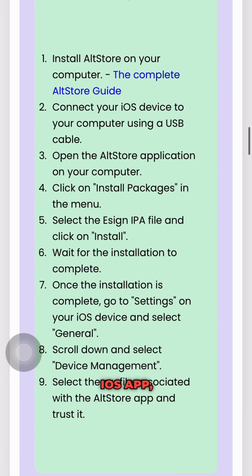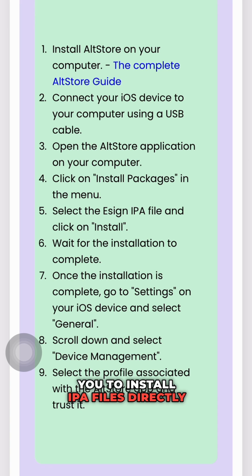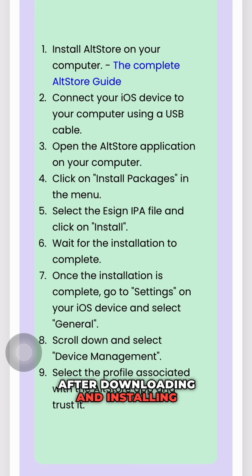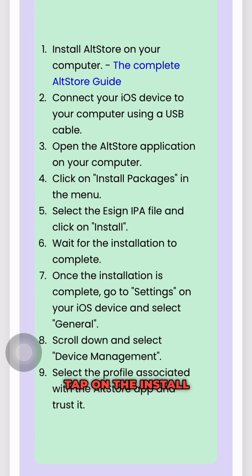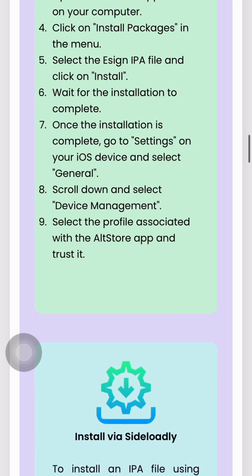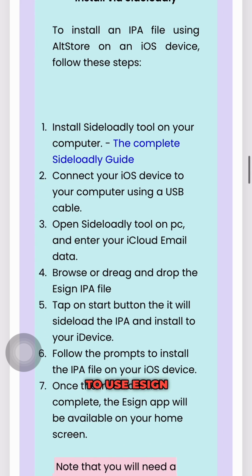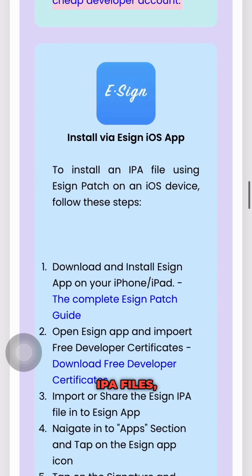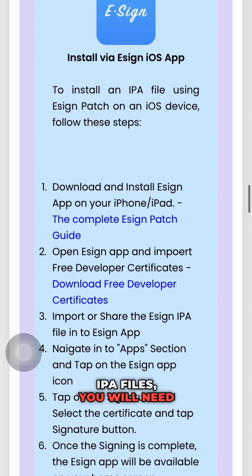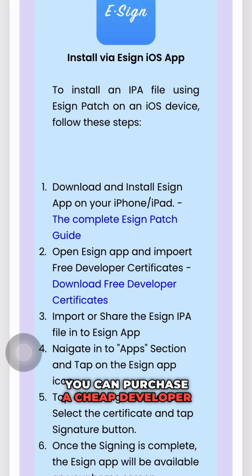Another option is to use the Scarlett iOS app, which allows you to install IPA files directly from your PC. After downloading and installing the Scarlett app, import the ESIN IPA file and tap on the install button. Once the signing process is complete, the app will be available on your home screen. Please note that in order to use ESIN and install IPA files, you will need a developer account. If you don't have one, you can purchase a cheap developer certificate.